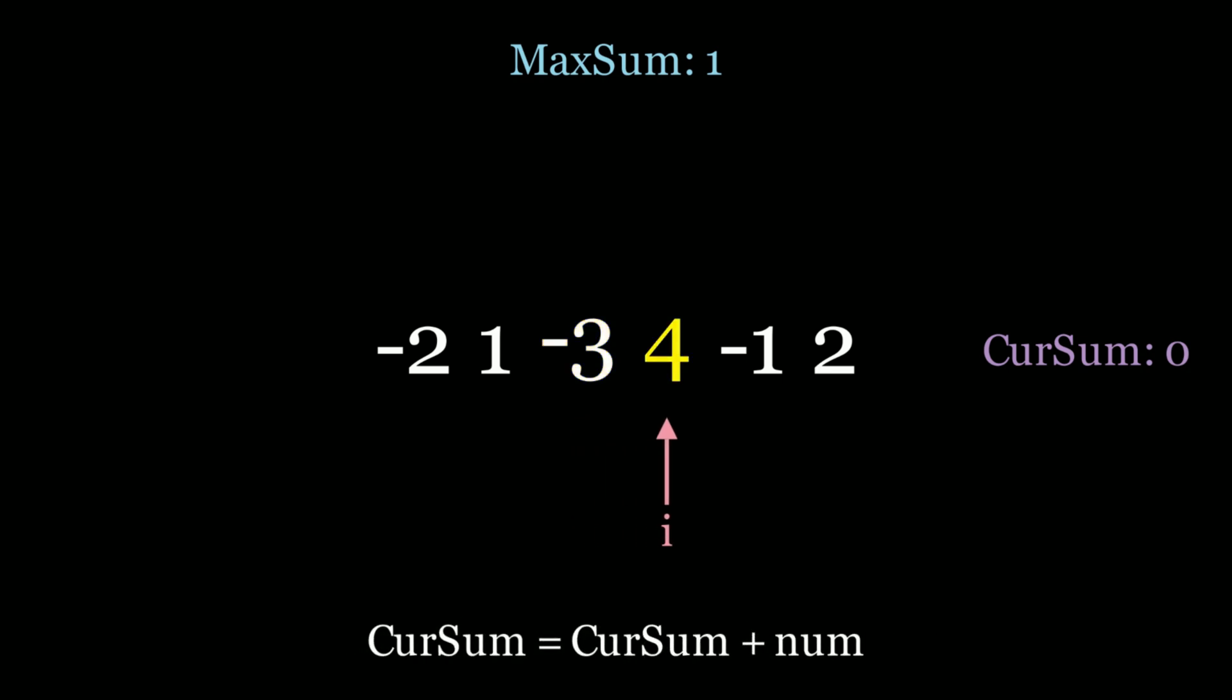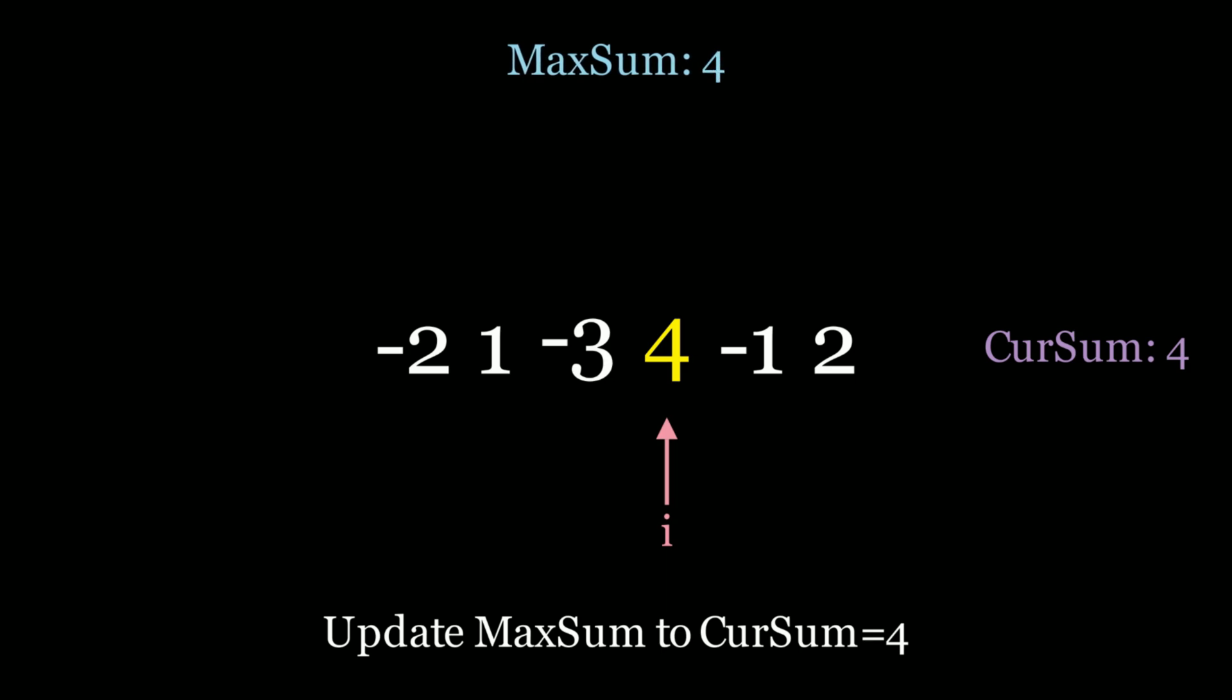So we move on to the next element, which is 4. Cur sum is now 0 plus 4, which is 4. This is greater than the maximum sum. So we update the max sum to 4. It's going to match cur sum. And we don't reset cur sum because it's greater than 0.